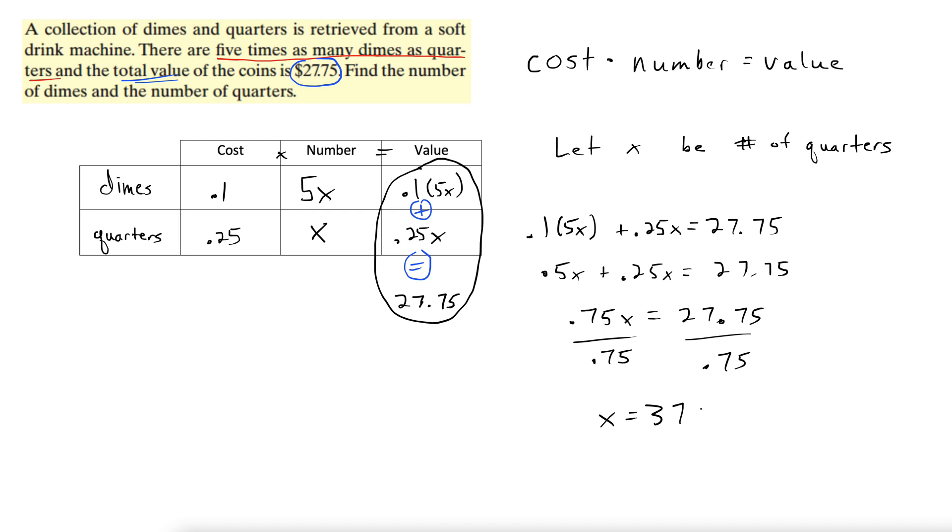Don't just think because we got x equals something that we've finished the problem. We have not. Let's look at what it asks us to do: find the number of dimes and the number of quarters. We decided that x was the number of quarters. So then for our answer, we might write something like this.